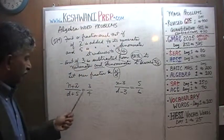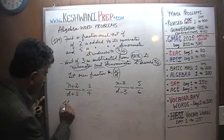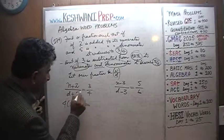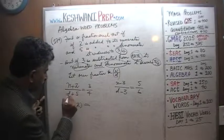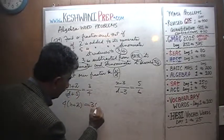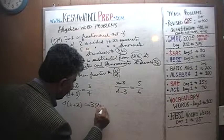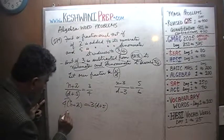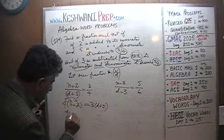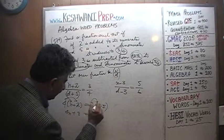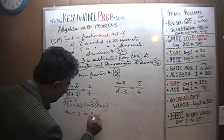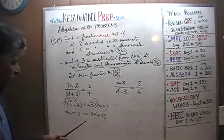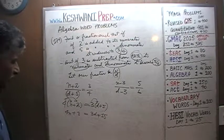Cross multiply the first equation. When we cross multiply we end up with 4 times (N plus 2) equals 3 times (D plus 5). Open the parentheses: we get 4N plus 8 equals 3D plus 15.